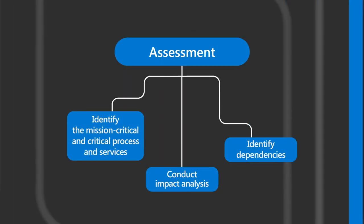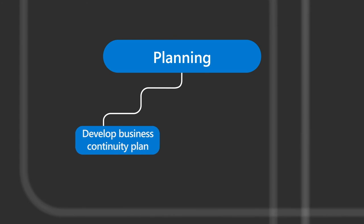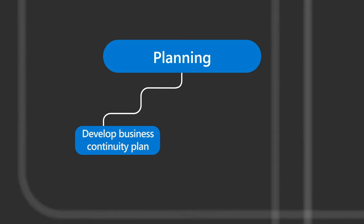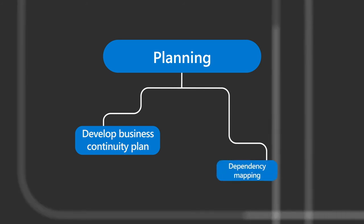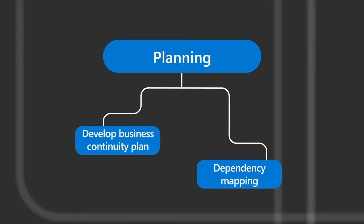Based on the assessment, a business continuity plan is developed to enable recovery of mission-critical and critical processes in the event of a major disruption. The plan must include recovery strategies for addressing relevant impacts and managing recovery, verification, and restoration activities. A plan must be reviewed and validated within 12 months of the previous validation.